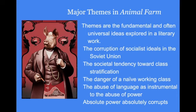The major themes in Animal Farm: watch for the corruption of socialist ideals in the Soviet Union, mirrored in Animal Farm through what they call animalism. The societal tendency towards class stratification, where some animals are better than others. The danger of a naive working class — the sheep who go along without question, and other animals fearfully pushed into compliance. The abuse of language as instrumental to the abuse of power — freedom of the press is usually one of the first things to go as a democracy moves toward dictatorship. And absolute power will absolutely corrupt in this story.